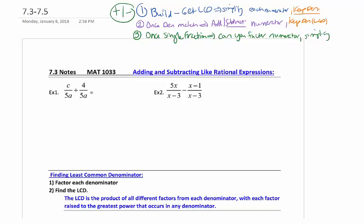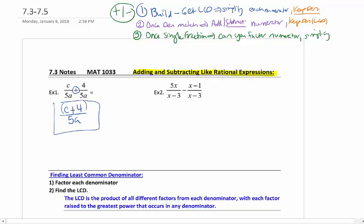So the advantage in 7.3 is that you are going to have like rational expressions, which means step one is done for you. The denominators already match. So on number one here, denominators already match. So we are going to step two, which says keep your denominators. And I always circle that to make sure I'm doing it correct. We're going to add across and add any like terms we can. In this case, I can't add the c plus 4, so I just put it in the numerator. And I look now for step three. Now that's a single fraction. Can I factor anything on the top? No. So there is nothing that I can cancel. That's it.